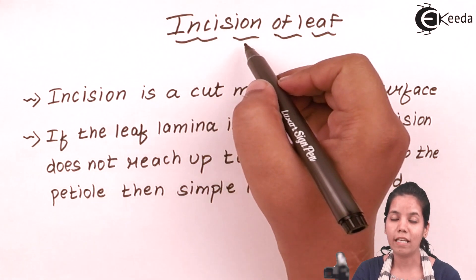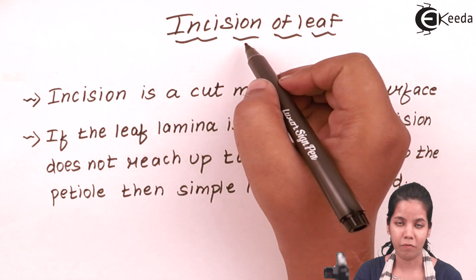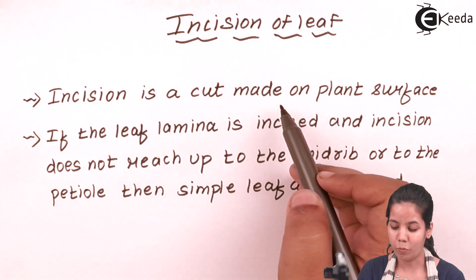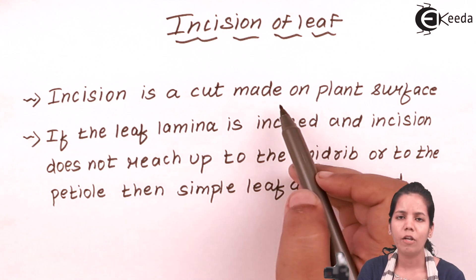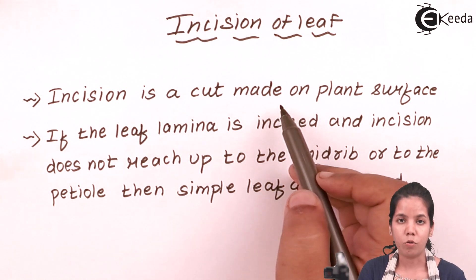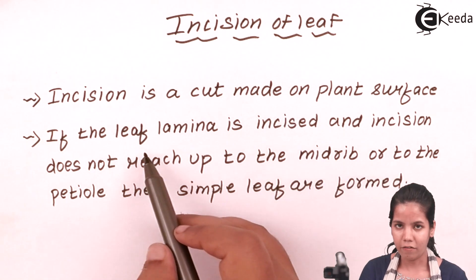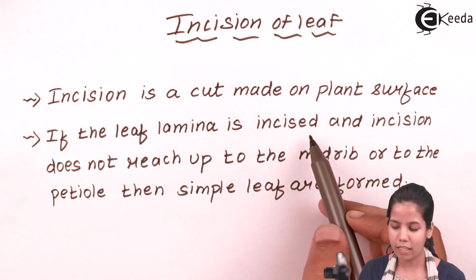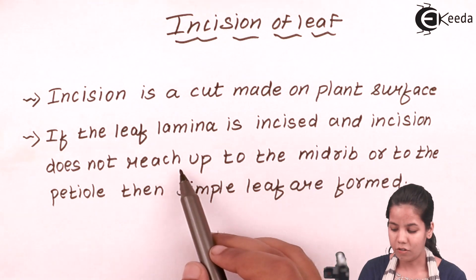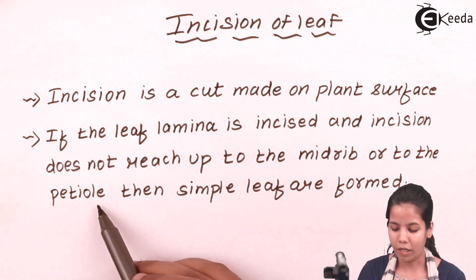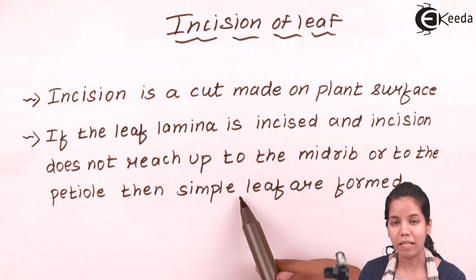Incision of leaf — or you can say the cut which happens on the surface of a leaf. A simple definition of incision would be a cut made on a plant surface. Precisely, incision is seen basically on leaf surfaces. In desertic or xerophytic plants, incision is not seen — we all know that desertic plants have thorns on their surface. Whenever the leaf lamina is incised, if the incision doesn't reach up to the mid-rib or the central rib or to the petiole, the holding part, then simple leaves are basically formed.